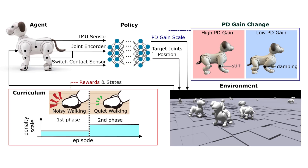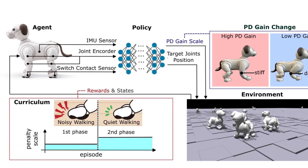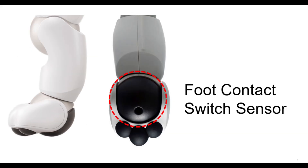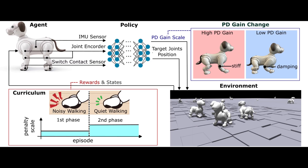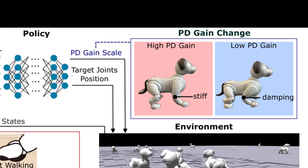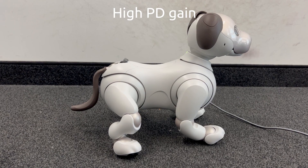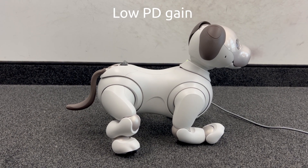Here is how it works. Firstly, we incorporate foot switch contact sensors to detect when the feet touch the ground softly. Secondly, the policy estimates the joint PD gain scale as an action to stiffen joints during the stance phase for body support and dampen them during the contact phase.